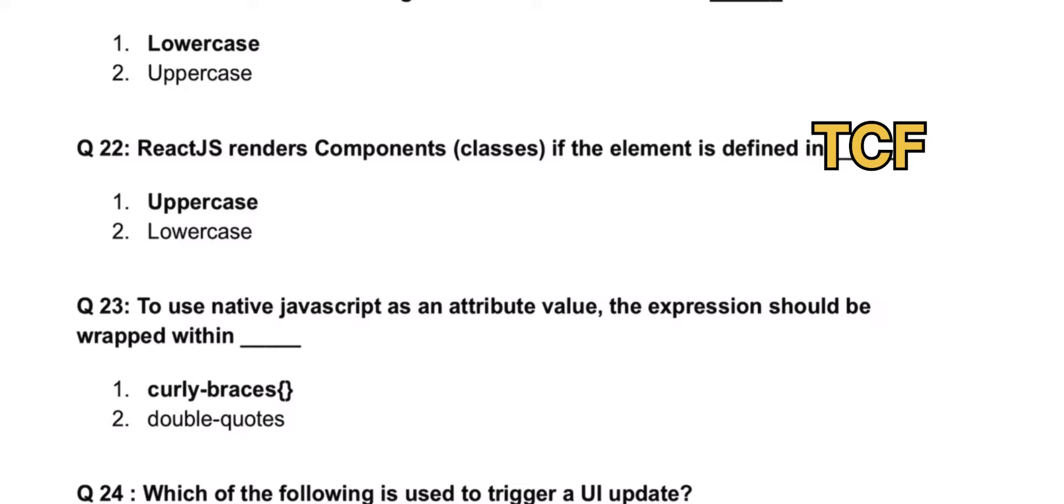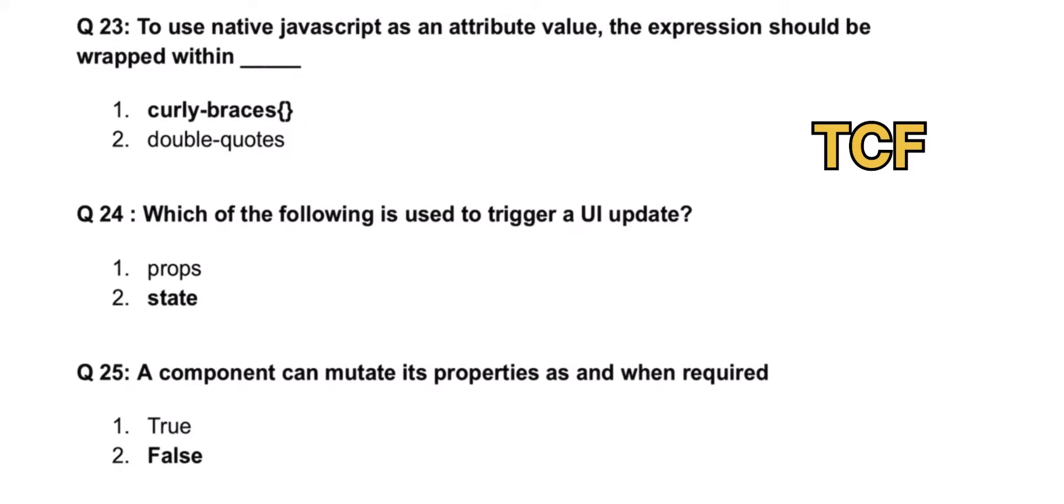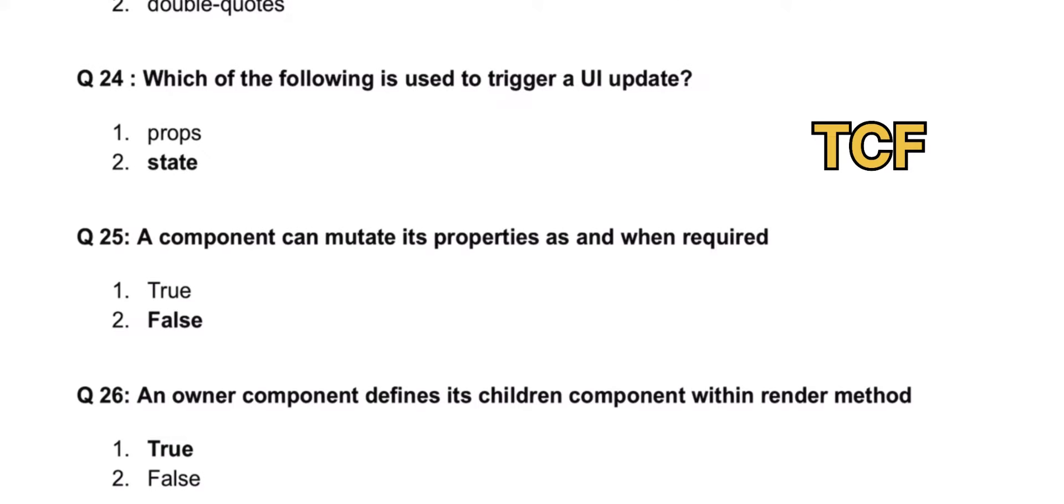To use native JavaScript as an attribute value, the expression should be wrapped in curly braces. Which of the following is used to trigger a UI update? That is state.